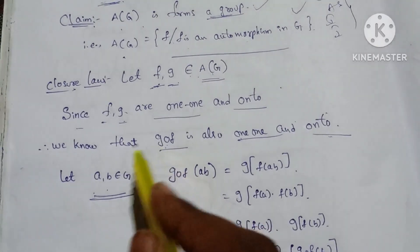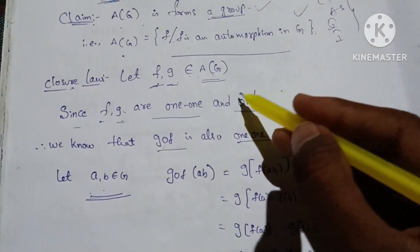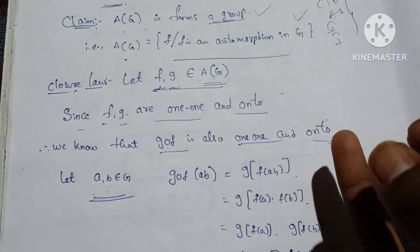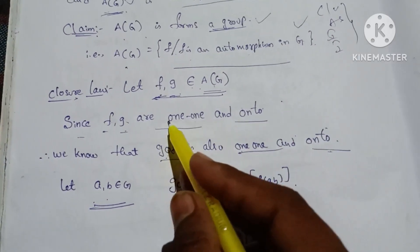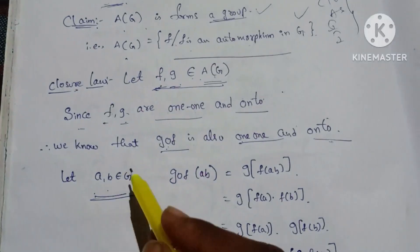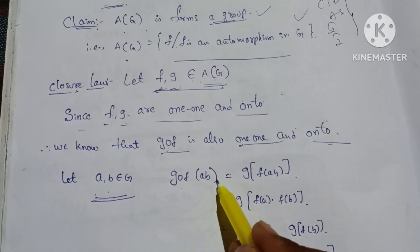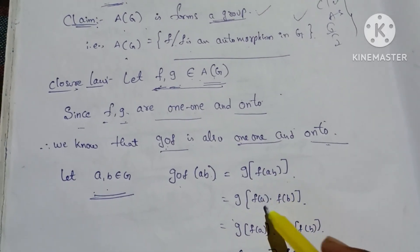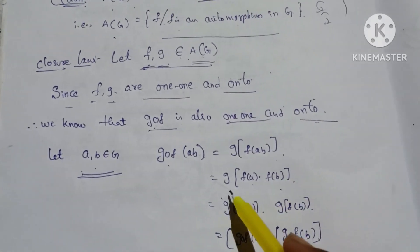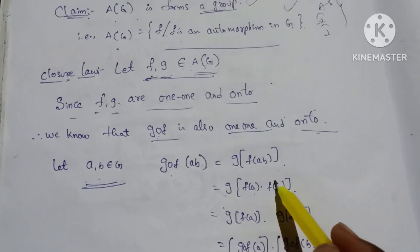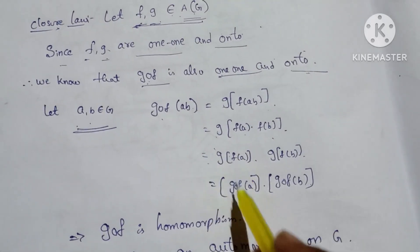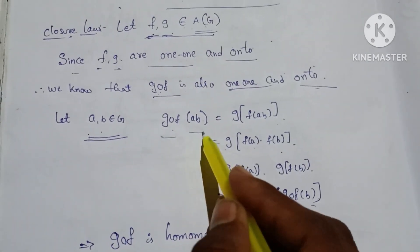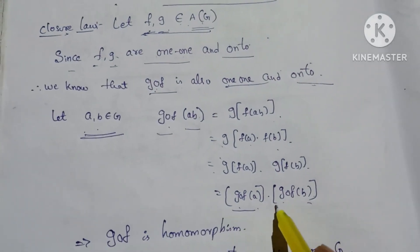Let a, b belong to G. I will show G circle F of (a·b). Since it is one-one and onto, we can prove it is an automorphism. We can prove the homomorphism. G circle F of (a·b) is equal to G of F(a·b), which equals G of (F(a)·F(b)), which equals G(F(a))·G(F(b)). So LHS is G circle F of a, and RHS is G circle F of (a)·G circle F of (b). Therefore G circle F of (a·b) equals G circle F(a)·G circle F(b).